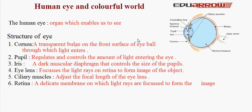4. The eye lens. The eye lens focuses the light rays on the retina to form an image of the object. It helps with finer adjustment of the light rays so that the image is formed on the retina. Most of the refraction actually takes place at the cornea.